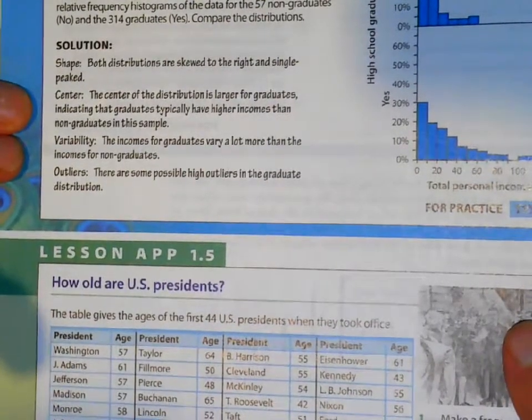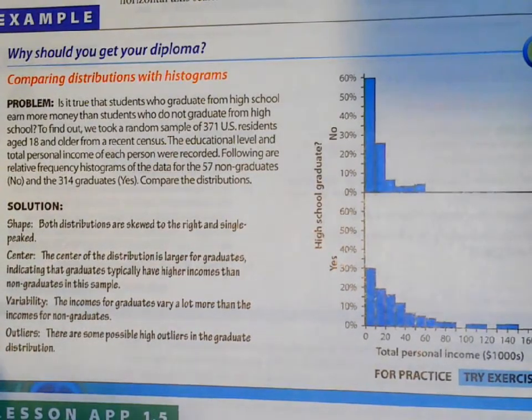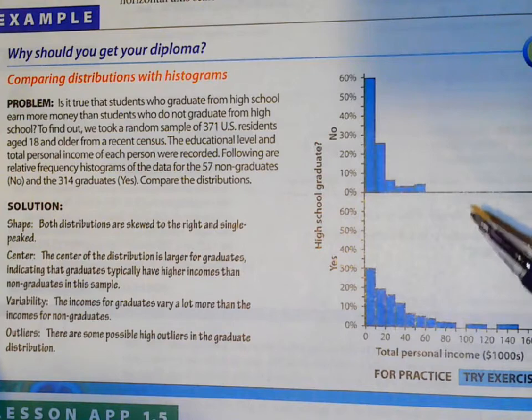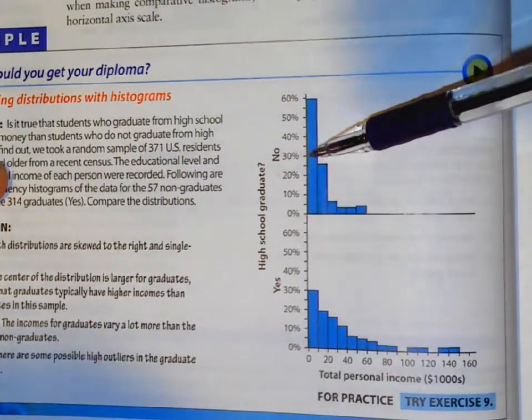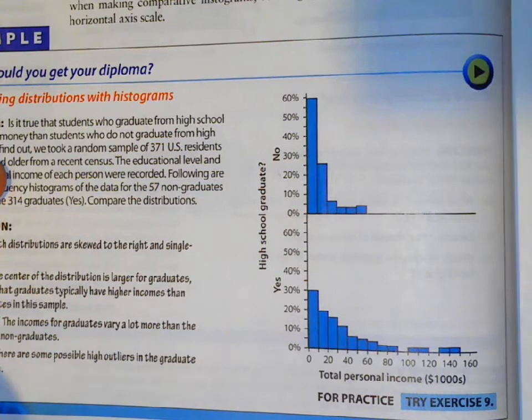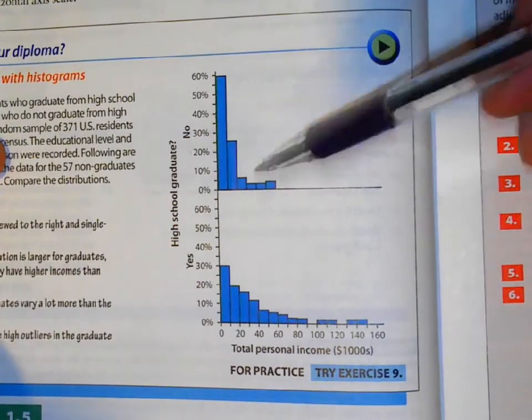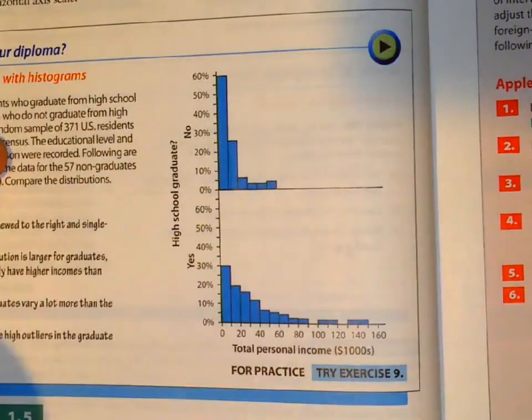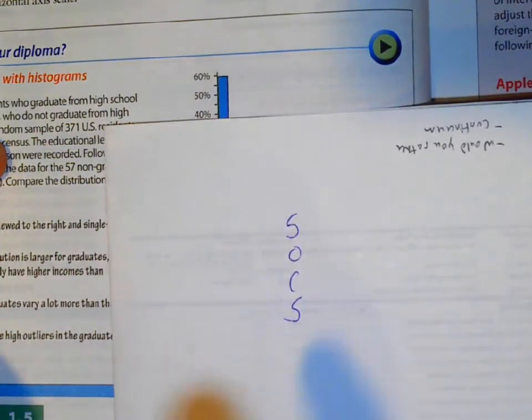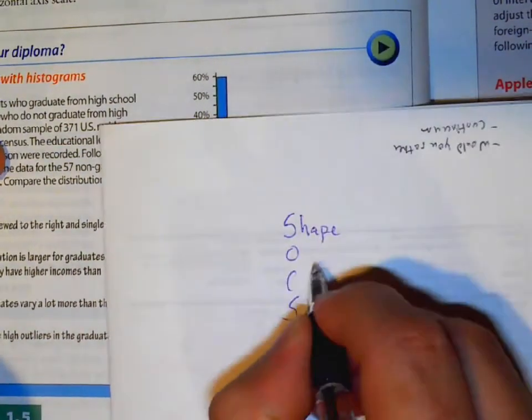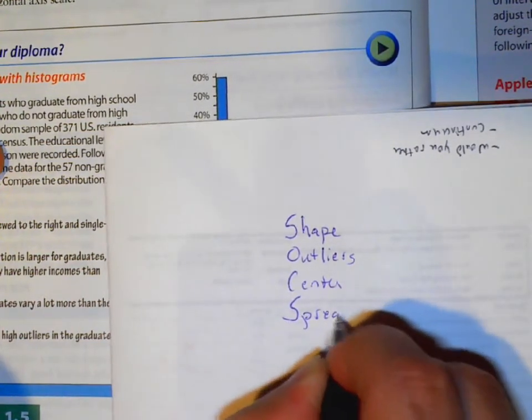Once again, I'm going to ask you to compare distributions at times. So this is total income if people are a high school graduate. These are the people that didn't graduate and their incomes. And these are the people that did graduate and their incomes. So how would you compare these distributions? Once again, we want to use SOCS. We're talking about shape, outliers, center, and spread.